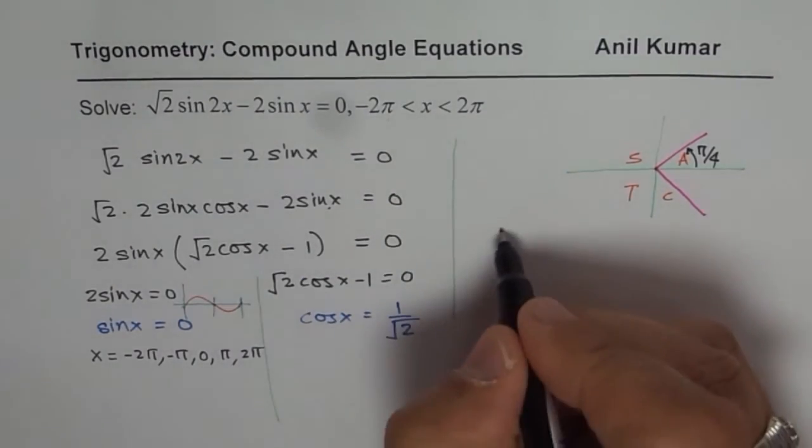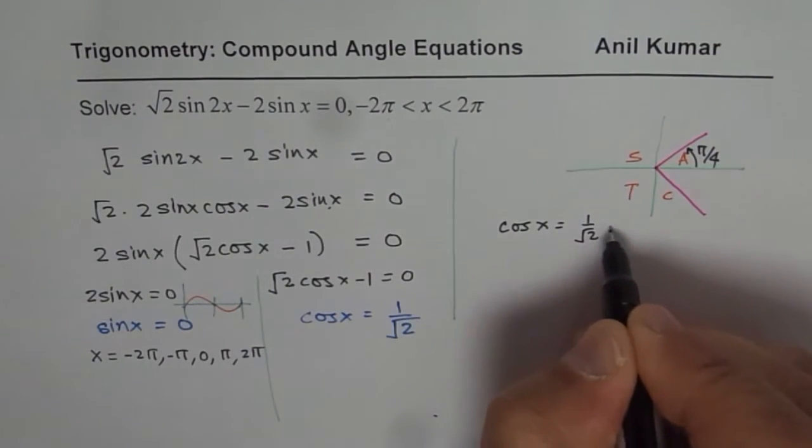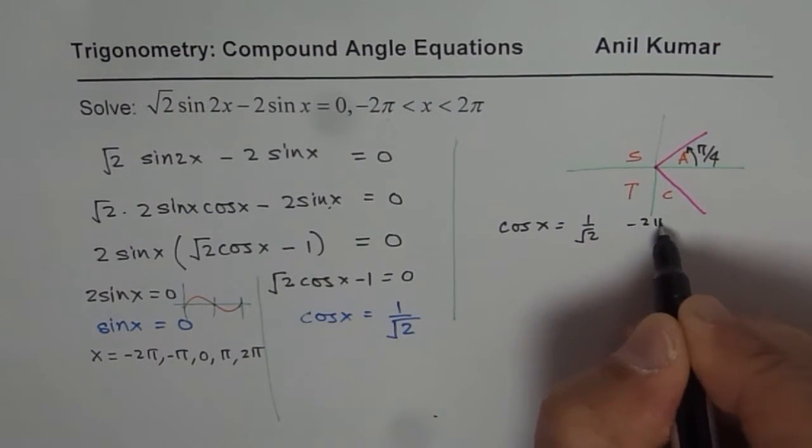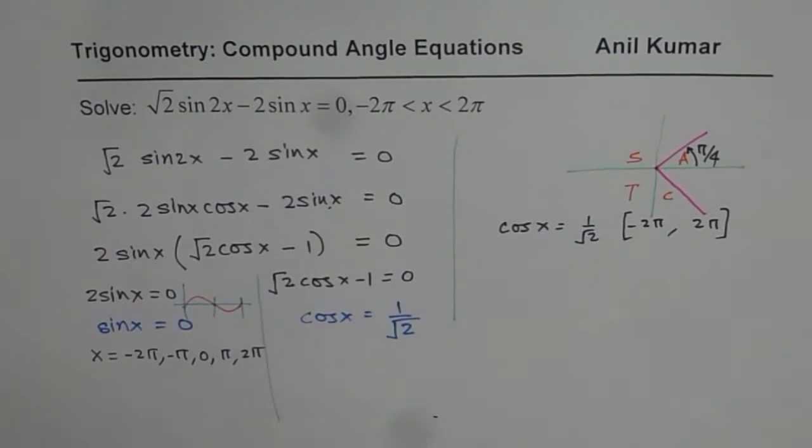So we have, we will solve for cos x = 1/√2 and the domain is from -2π, both included, to 2π. You could also write like this. Is that okay?